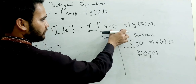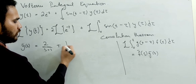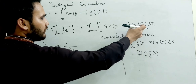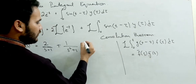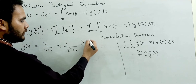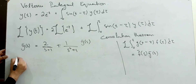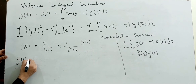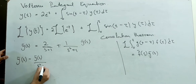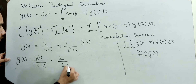So if g(t) = sin(t), then g̅(s) = 1/(s² + 1). And if y(tau) is f(tau), then the Laplace of y(tau) is y̅(s). Substituting, we get: y̅(s) minus y̅(s) over (s² + 1) equals 2 over (s + 1).